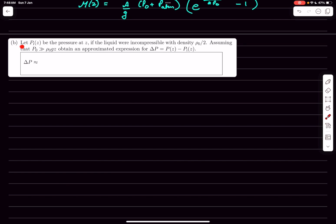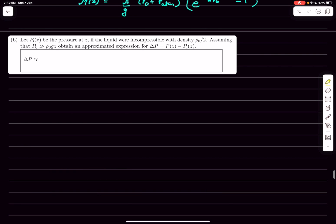So now in the third problem they're saying let P_i(z) be the pressure at z if the liquid were incompressible with density ρ0/2. So this will just simply take our original formula, right? So P_i(z) would simply be p_atm plus ρgz and ρ in here is going to be ρ0/2.